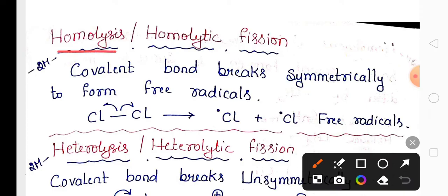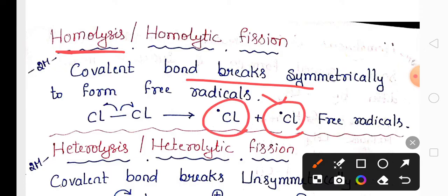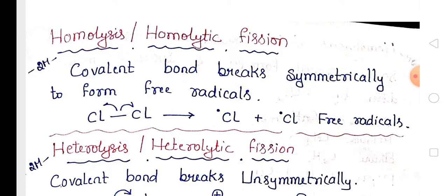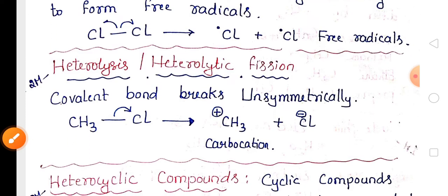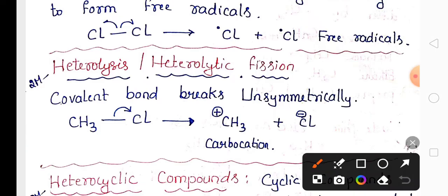The definition of homolysis is very important with an example. Homolysis means the bond breaks symmetrically to form free radicals. Free radicals are species having an odd number of electrons. The definition of heterolysis or heterolytic fission is also very important for two marks.